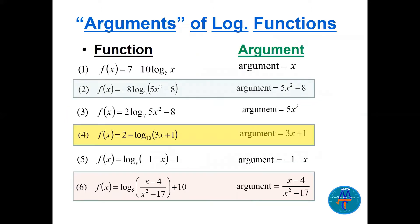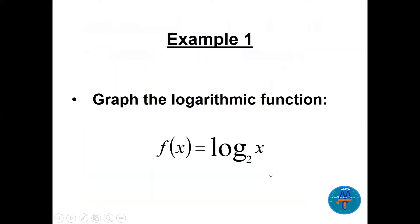This next slide has six examples just to show you how to identify the argument — it is not a problem to solve, only to understand how to read the argument. For example, in 7 − 10·log base 5 of x, the argument is just x. In another case, the argument inside brackets is everything inside. For 5x², the argument is 5x². Read this slide carefully to learn how to find the argument.